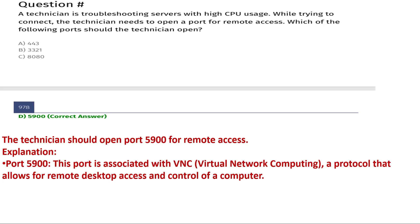A technician is troubleshooting a server with high CPU usage while trying to connect. The technician needs to open a port for remote access. Which of the following ports should the technician open? Option A: 443, Option B: 3321, Option C: 8080, Option D: 5900. The correct answer is Option D, 5900.